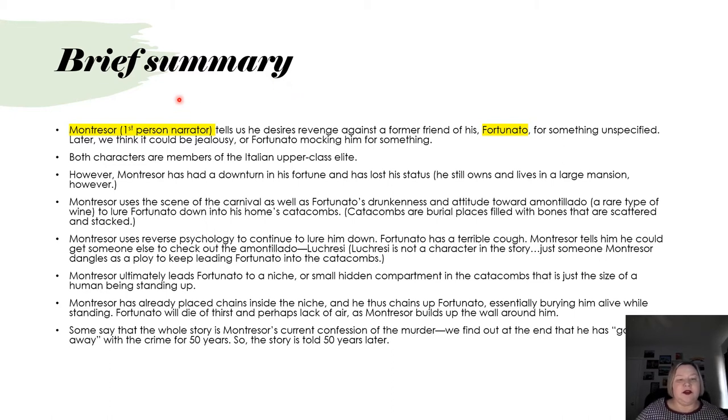First of all, we have two characters in the story: Montresor, who is the first person narrator, and Fortunato, a former friend of his. Fortunato still believes that he's friends with Montresor, although they're not as close as they once were. Montresor tells us, the audience, that he desires revenge against his former friend for something unspecified. Basically, Fortunato insulted him, and so he desired revenge.